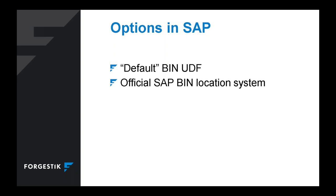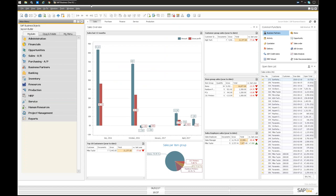Use that default bin location, then use a pick list and print the default bin location — or have a default location and an overflow location — and you start getting a feel for the system. This is for people making a transition. If you're watching this, you're probably thinking about transitioning. The official bin location system makes great sense once you're at a specific size or you already have a warehouse manager owning the processes. You can dip your toe in with a default bin UDF and print that on the item master when doing picking.